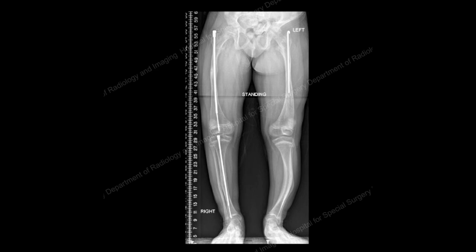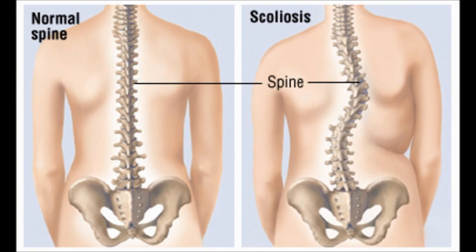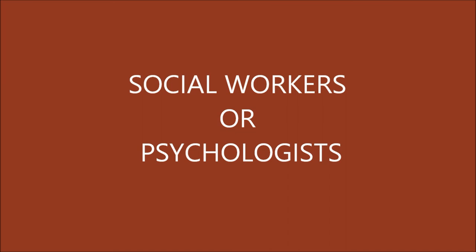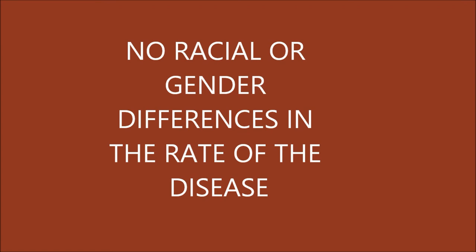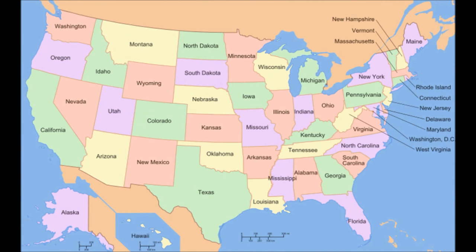Bracing can also be very helpful. Reconstructive surgery can correct any deformities, such as bowed legs or spinal problems, which can greatly affect a person's mobility. Social workers or psychologists can help people adapt to life with OI and can help with any body image issues they might have. Osteogenesis imperfecta is genetic, so the only risk factor is family history. There is no racial or gender difference in the rate of the disease.